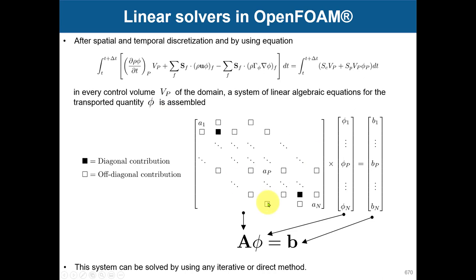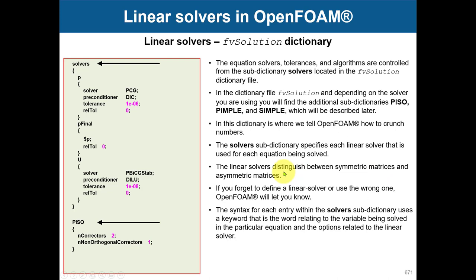This is the matrix of coefficients — the influence of all the cell centers on each other. You have everything here. This is the known value, and these are what you know about your solution: boundary conditions and explicit contributions. The linear solvers are set in fvSolution, and for every single variable you solve in OpenFOAM, you need to define the linear solver — the iterative method used to solve that system.